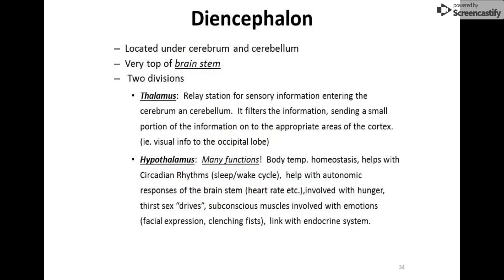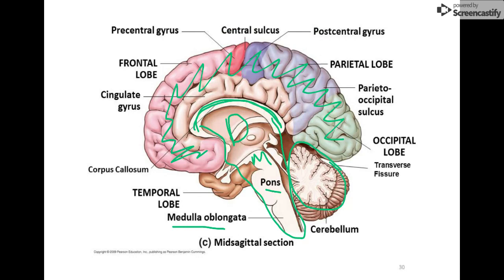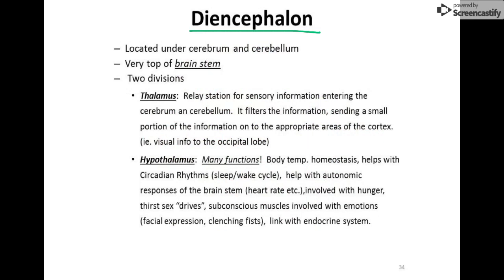Moving on to the brainstem: the very top part is called the diencephalon, right underneath the corpus callosum. The diencephalon has two portions — the thalamus and the hypothalamus. The thalamus is the most important for us: it's a relay station for sensory information entering the cerebrum. If I touch a table, that information travels from receptors in my fingers through the nerves, into the brachial plexus, into the spinal cord, up through the brainstem, all the way to the thalamus.